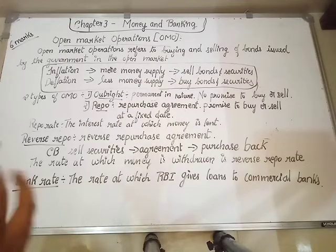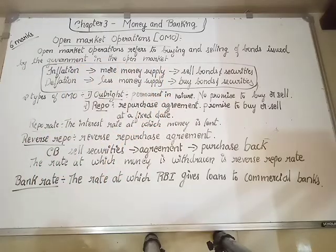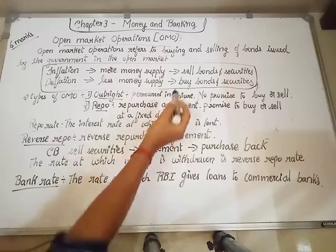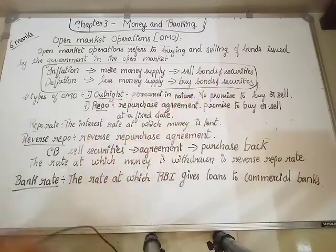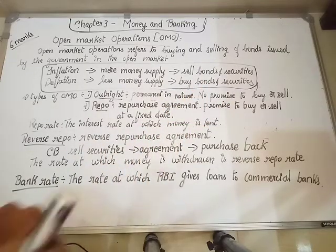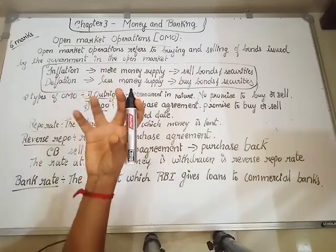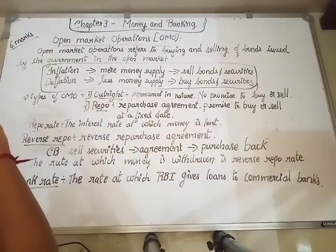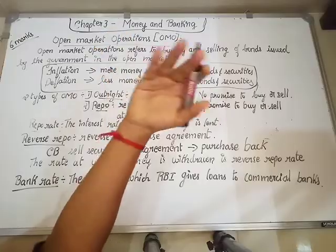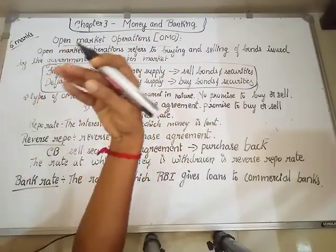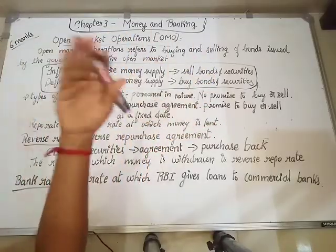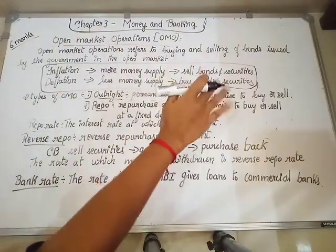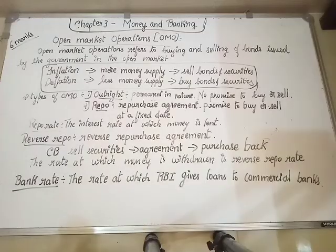So in the case of inflation, what will the government do? The government has to sell bonds and securities. When the government sells the securities, people are buying them. When you buy, you are giving your money. So the excess money is absorbed from the economy, and the economy stabilizes.